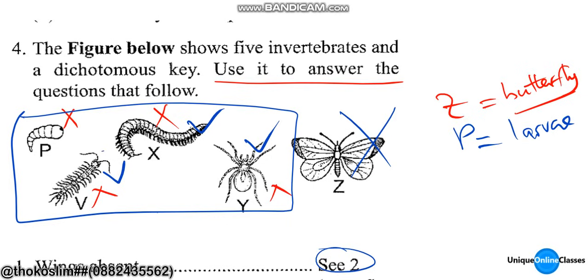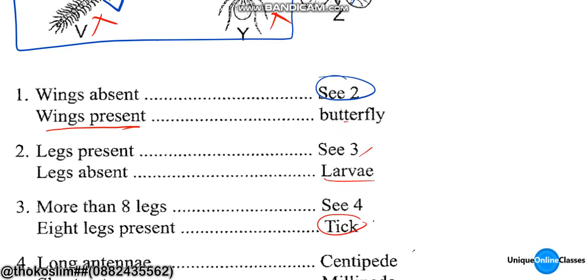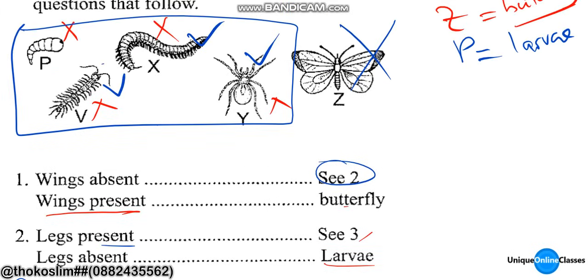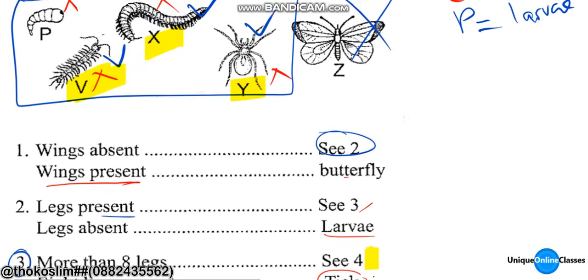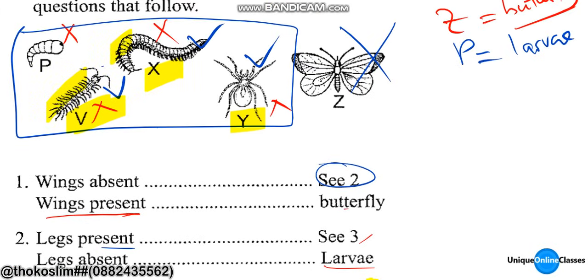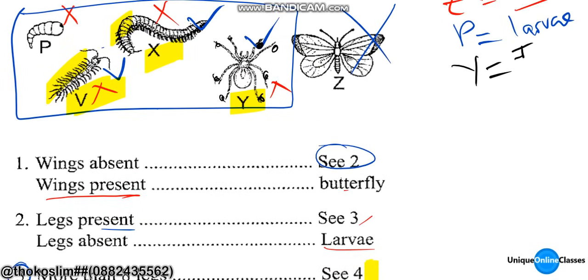Larva — P is a larva. Step number three: legs present — so they would have this organism and this one. More than eight legs — step number four. With eight legs it's a tick. You can see: one, two, three, four, five, six, seven, eight — that's why it's a tick.